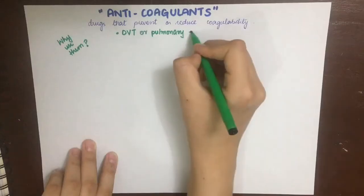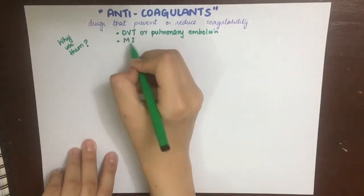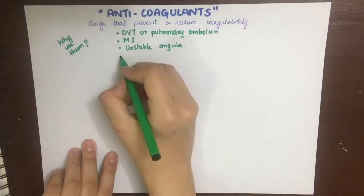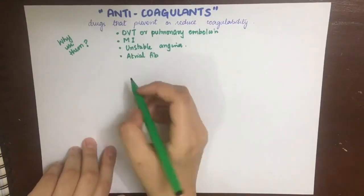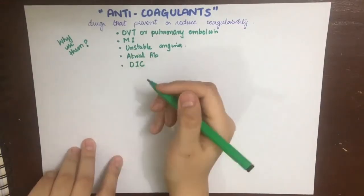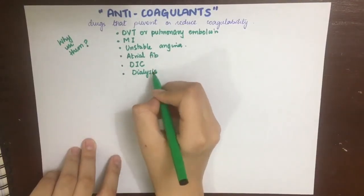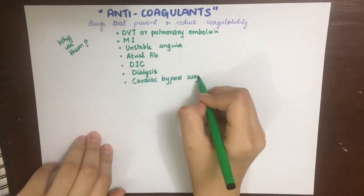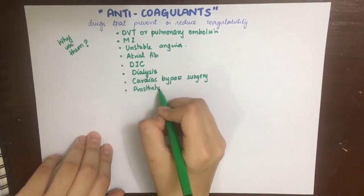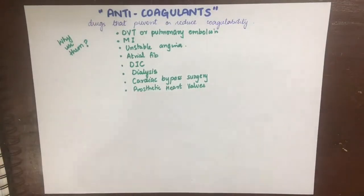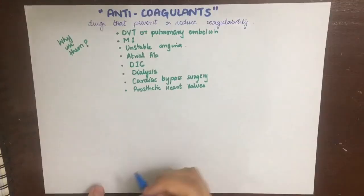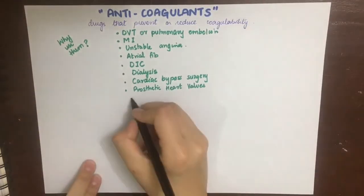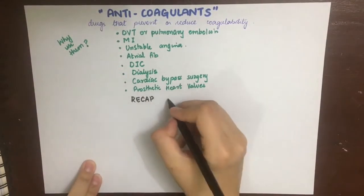We use anticoagulants in deep venous thrombosis or pulmonary embolism, myocardial infarction to prevent recurrent attacks of MI and stroke, in unstable angina to decrease the MI occurrence, in atrial fibrillation which causes stasis of blood in the atria which can lead to mural thrombus formation, disseminated intravascular coagulation in some cases, in dialysis to prevent thrombosis in the blood circuit, in cardiac bypass surgery and in prosthetic heart valves to decrease thromboembolism.